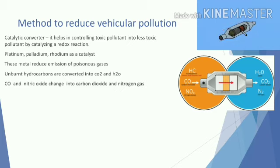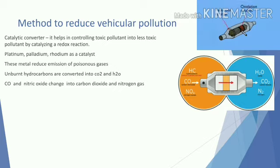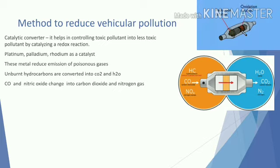Next, we discuss how to control air pollution from vehicles. Lorries, auto-rickshaws, and other vehicles release a large amount of exhaust gas, which affects surrounding people. This is controlled using a device called a catalytic converter. The catalytic converter helps in controlling toxic pollutants by catalyzing redox reactions.